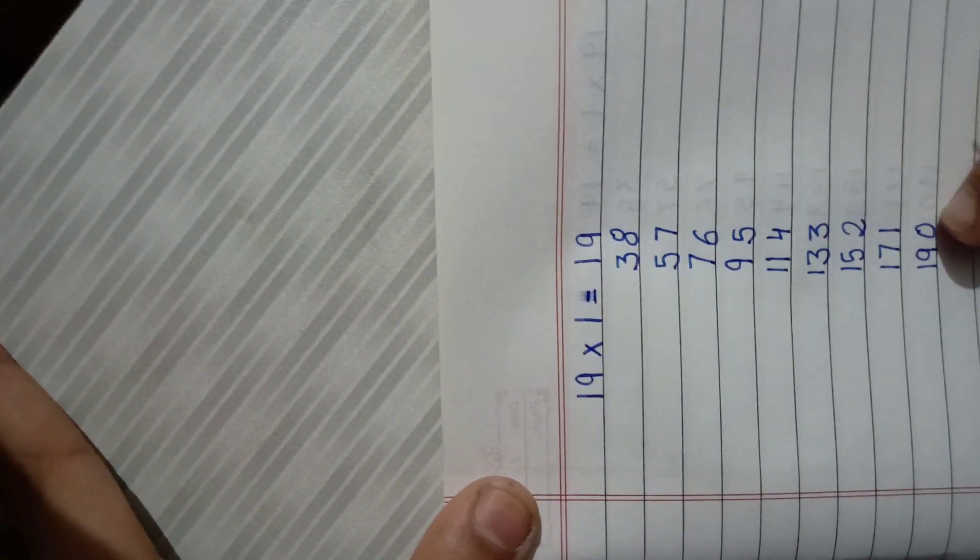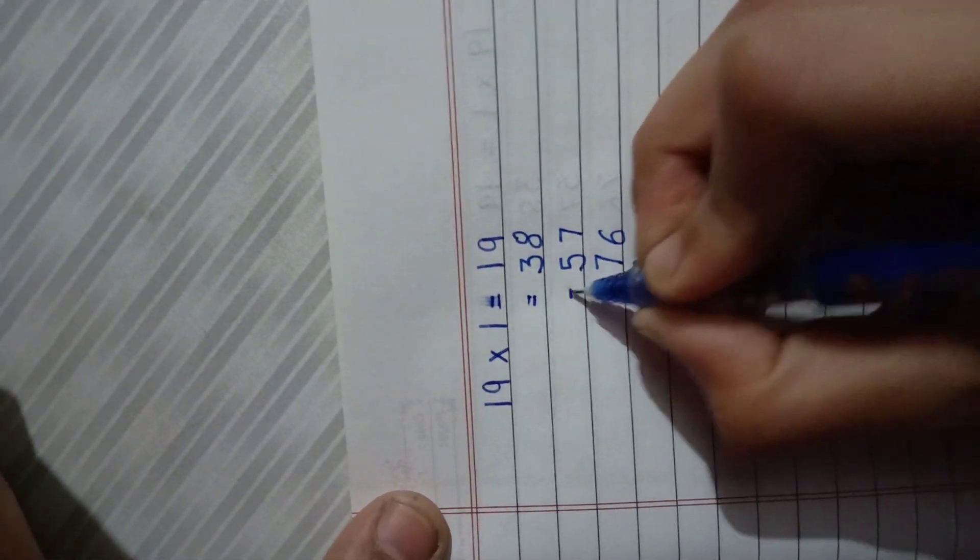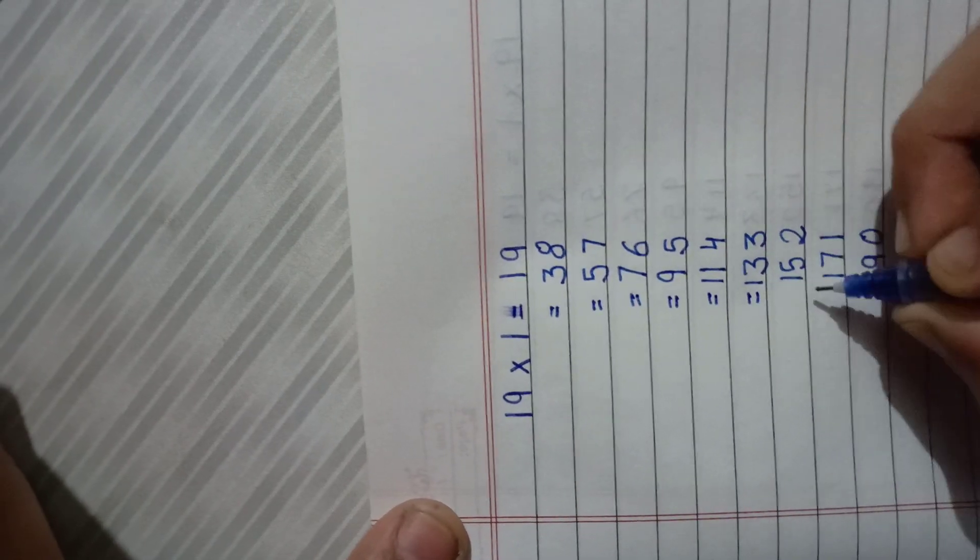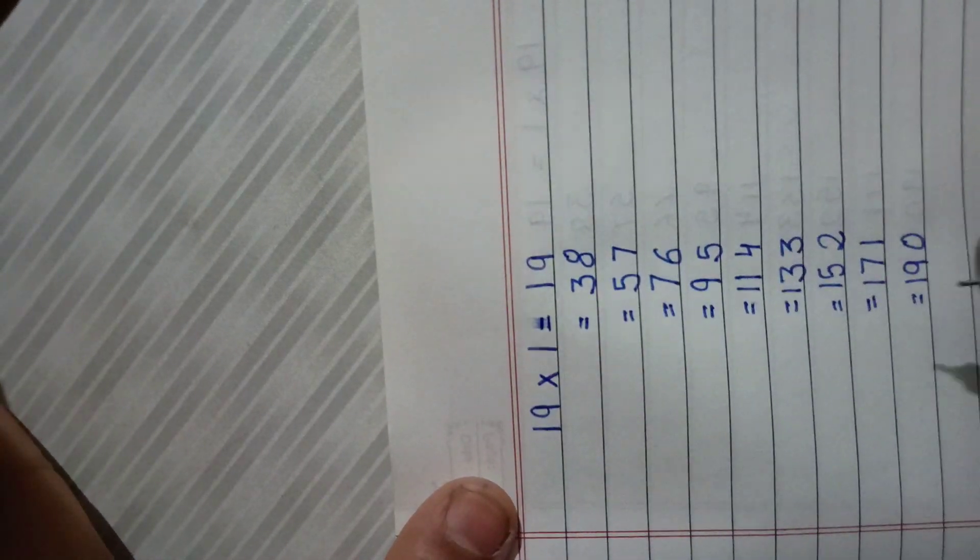So this is a table of 19. Now we will complete this. And here we have to write counting from 1 to 10.